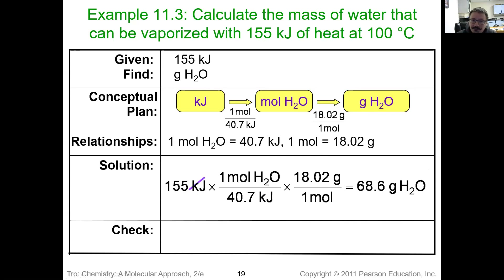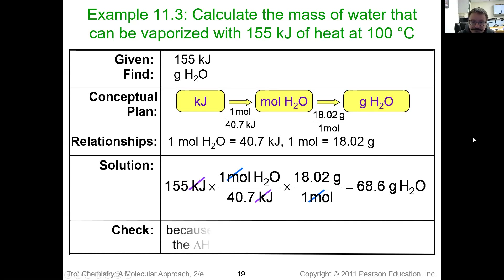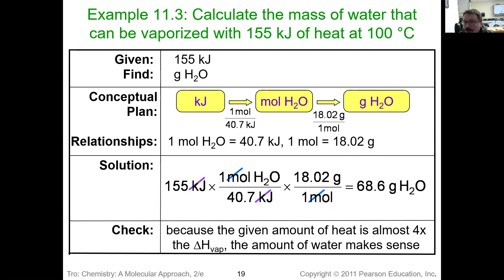Going through, we cancel kilojoules and moles and we're left with grams. The 155 kilojoules we started with is about four times larger than the enthalpy of vaporization for one mole, so it makes sense our mass is about four times the molar mass. If we came up with only 18 grams or less, we'd know right away we'd probably made a misstep — maybe multiplied when we should have divided. You should always be able to do a simple logic check on problems to let you know if you went about it the correct way.